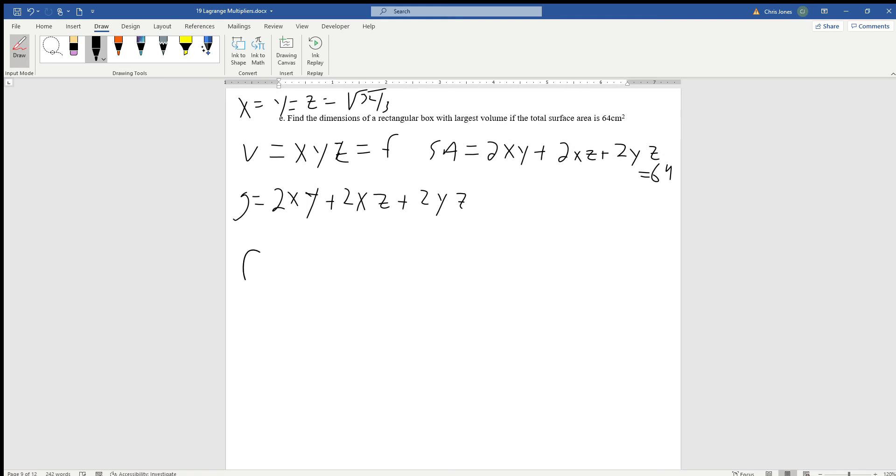So f_x is going to be really easy, f_x is just going to be yz. And lambda g_x is going to be equal to, lambda g_x is going to be 2y, so lambda times 2y plus 2z.